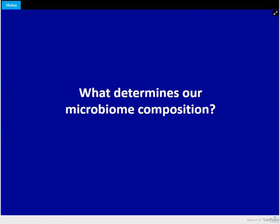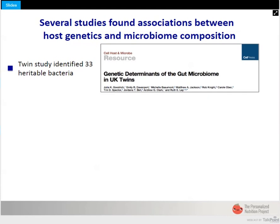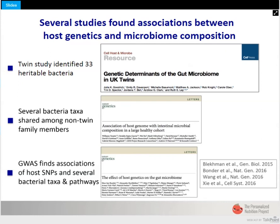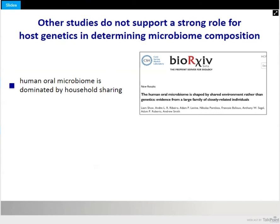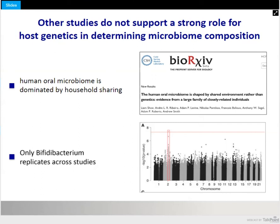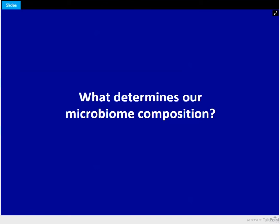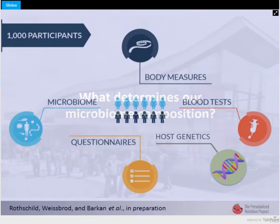Over the past several years, several studies found various associations between microbiome composition and the genetics of the host. A few studies found several bacterial taxa shown to be heritable by genetics. Genome-wide association studies have identified several SNPs associated with specific bacterial taxa, suggesting a role for human genetics in determining microbiome composition. However, in parallel, other works showed that the oral microbiome is dominated by environmental factors, not host genetics, and other studies found very few associations between human genetics and bacterial taxa. We wanted to study this question in a comprehensive, systematic way.